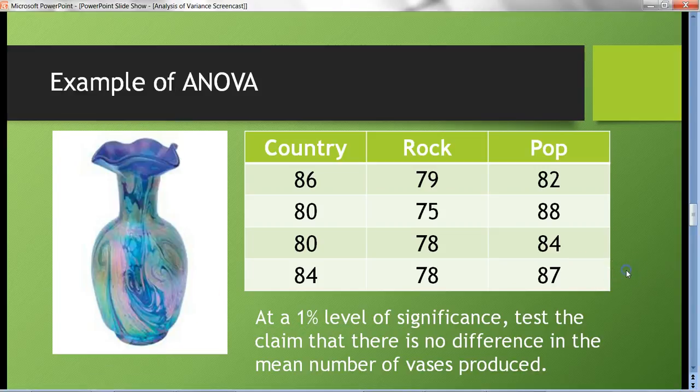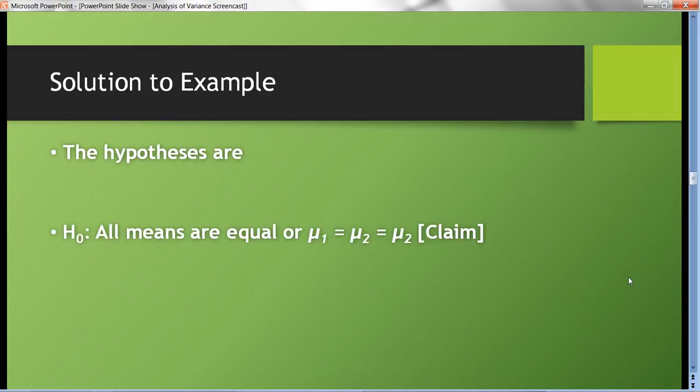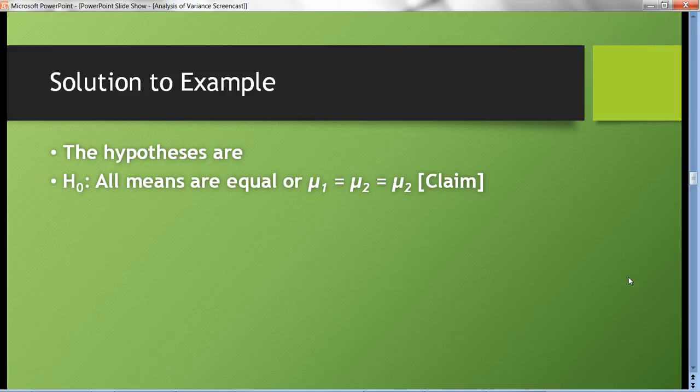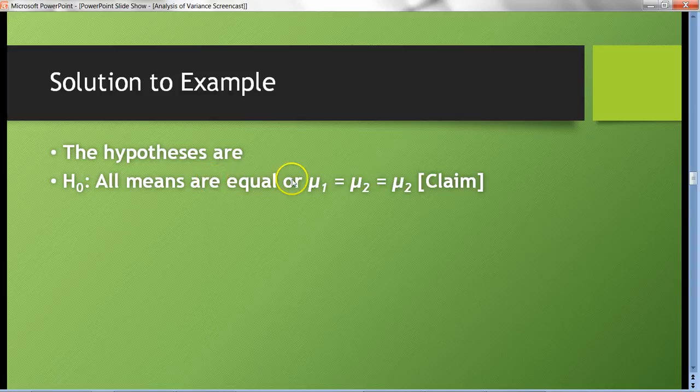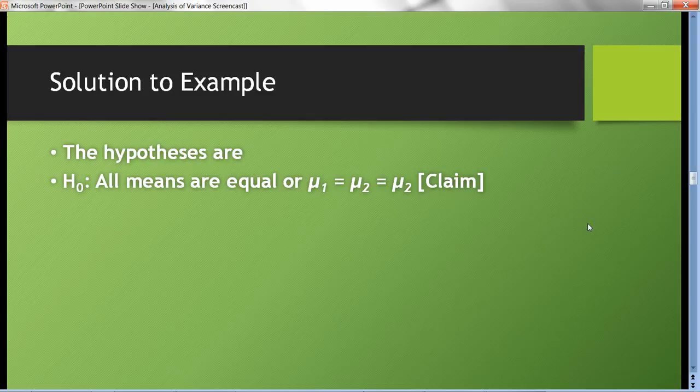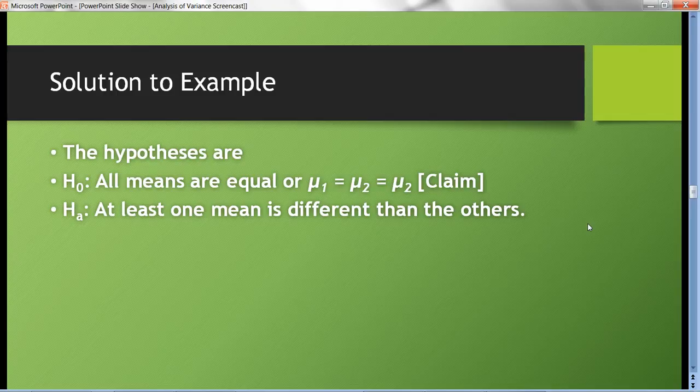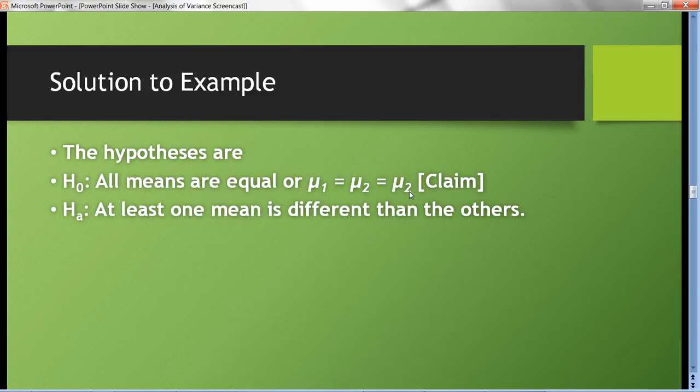Let's start our hypothesis test now. The null hypothesis would be the claim that all the means are equal—that there's no difference in the mean number of vases that were produced. You can write it narratively, all means are equal, or you can write it in mathematical form with the three population parameters μ₁ = μ₂ = μ₃. The alternative hypothesis would be that at least one mean is different than the others.